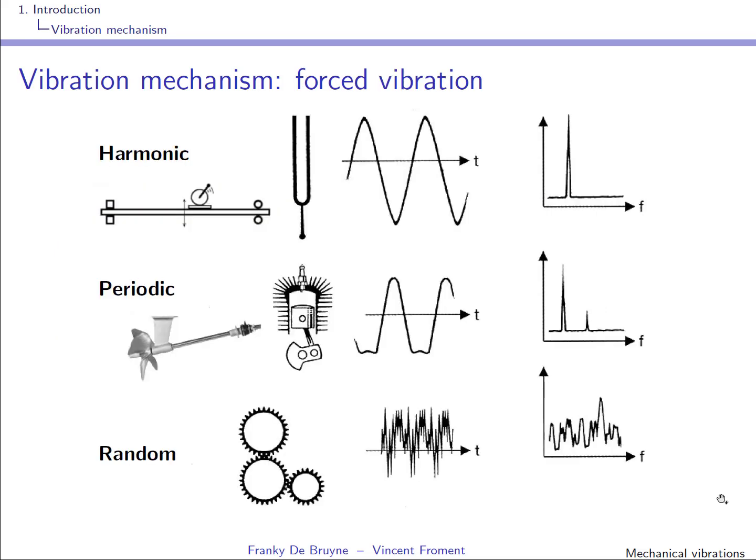Here you see the three types of forced vibration — it means continuous over time. The first example is harmonic excitation; for instance, a modal shaker with a sinusoidal input. If you look at the spectrum, you see only a spike at one frequency. Another example is periodic excitation — like a piston — where the spectrum has a spike at the fundamental frequency and at one or more harmonics. An example of a gear train shows excitation more random in nature, and the spectrum shows contributions at many frequencies.